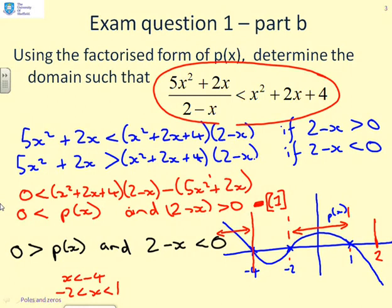What was the second condition? We had 0 is greater than p(x) — so p(x) is negative — and 2 minus x is less than 0, meaning x is bigger than 2. Well, if x is bigger than 2, then p(x) is indeed negative. So we should also get the region x greater than 2. The final answer combines all these regions.